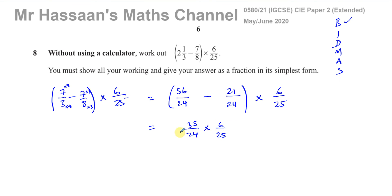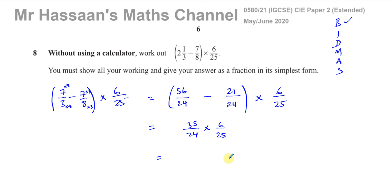Now we need to multiply these two fractions together. When multiplying fractions, you don't need to make the denominators the same — you multiply numerators together and denominators together. However, the numbers will be quite large, so if you can simplify — cancel any numerator with any denominator that share a common factor — that makes life much easier.